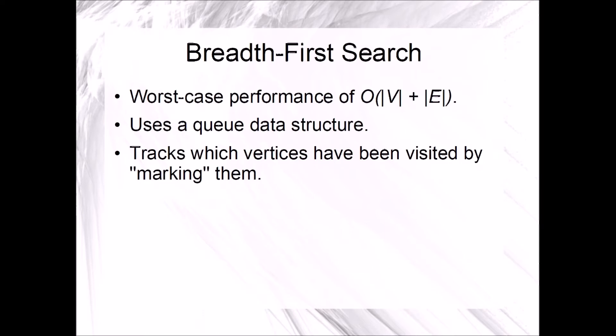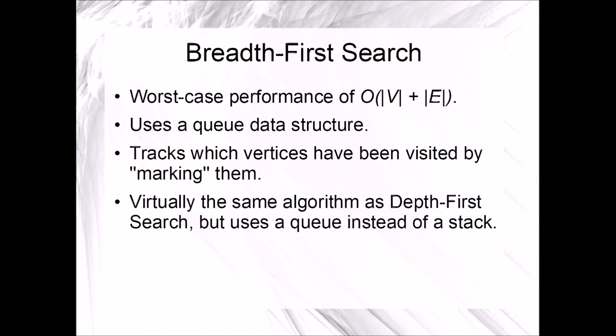The breadth-first search will track which vertices have been visited by marking them. This marking action is what avoids the algorithm going into infinite loops. This algorithm is virtually the same as the depth-first search, but substitutes a queue first-in, first-out data structure for the last-in, first-out stack data structure used by the depth-first search.